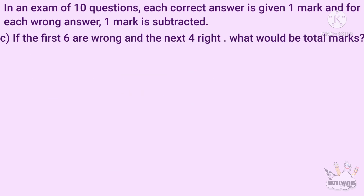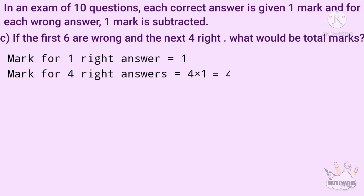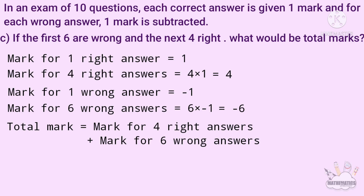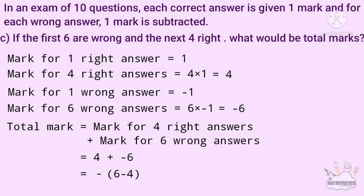If the first 6 are wrong and the next 4 right: 6 answers are wrong and 4 answers are right. Mark for 4 right answers is 4 into 1. Mark for 6 wrong answers is 6 into minus 1, that is minus 6. Total mark is 4 right answers plus mark for 6 wrong answers, that is 4 plus minus 6. So this becomes 6 minus 4, that is minus 2.